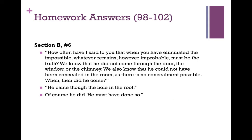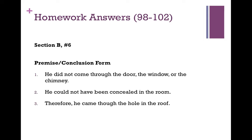This was taken from Sherlock Holmes. In premise-conclusion form: premise one, he didn't come through the door, the window, or the chimney; premise two, he could not have been concealed in the room. Therefore, he came through the hole in the roof. This argument is making an assumption: there's no other way to enter the room. How do we know he didn't come through a hole in the floor, or something like that?